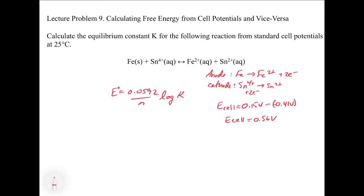So that's the first step, because we need E cell to calculate K. The other thing we're going to recognize is that n for this one is going to equal 2, because we have two electrons transferred in that process. So now we can plug in and solve for K. So we can say that 0.56 volts is going to equal 0.0592 divided by 2 times the log of K. So if you solve for K in this case, you're going to get K equals 8.3 times 10 to the 18th for K.